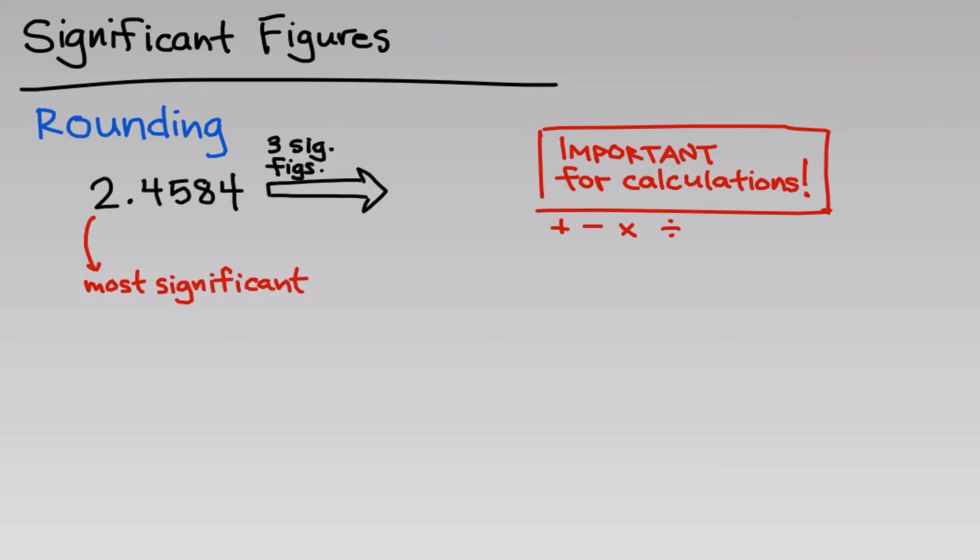The most significant digit on the left is where you're going to start. You're going to start here when it comes to rounding and specifying a particular number of significant figures. This is called the most significant digit because it's the largest place by definition on the left. Here, the ones place is the largest, and they get smaller by powers of 10 as we move off to the right.